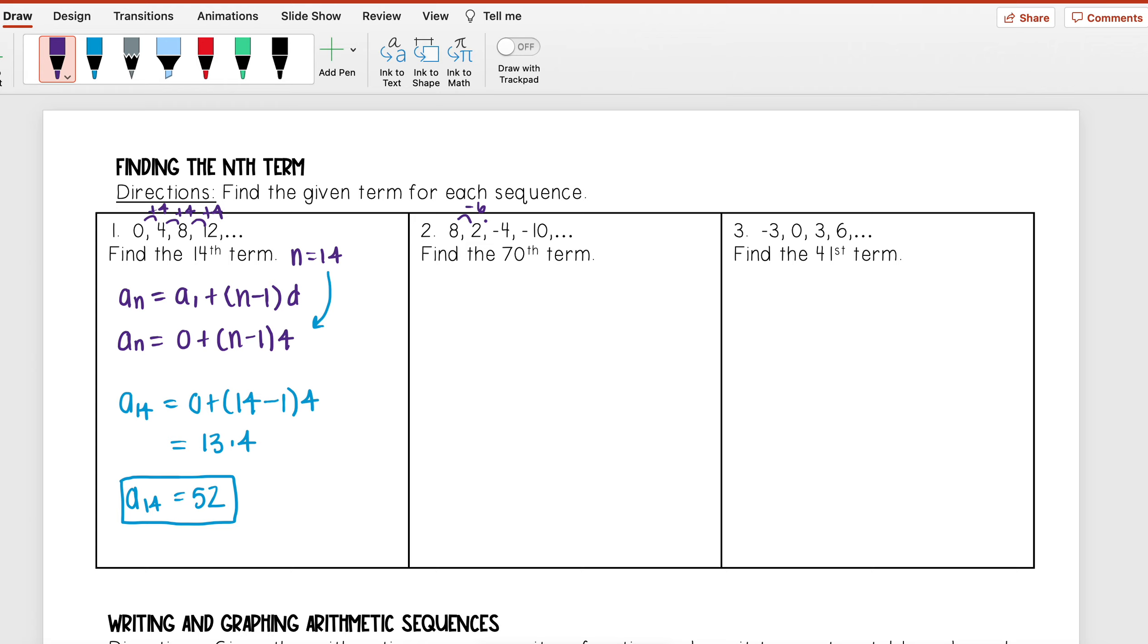Well to get from 8 to 2 I subtract 6, 2 to negative 4 subtract 6, and subtract 6. Well my first term here is 8, so a_1 I'm going to replace with 8, and my common difference I found is negative 6, so I'm going to replace d with negative 6.